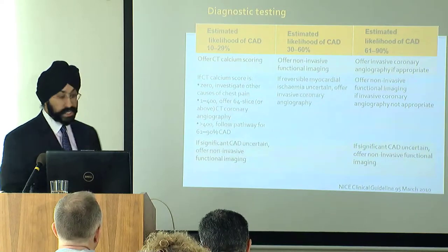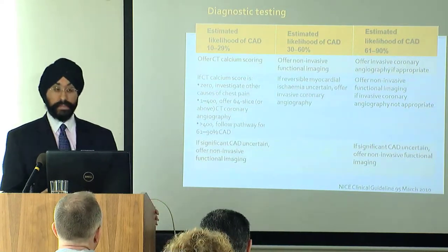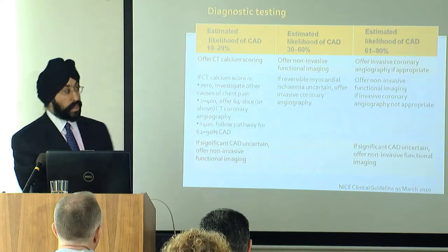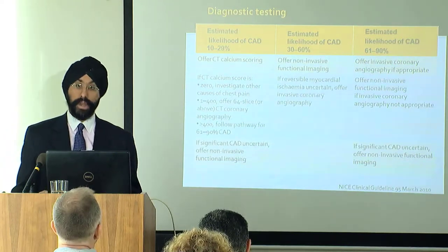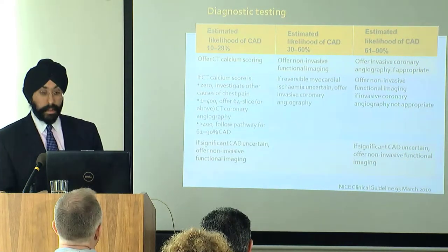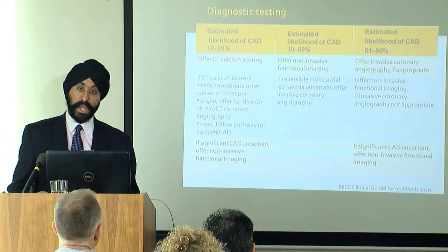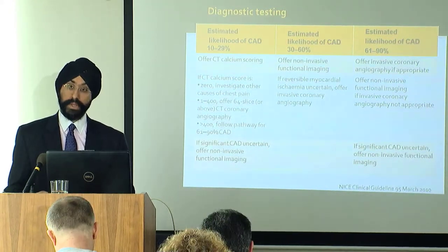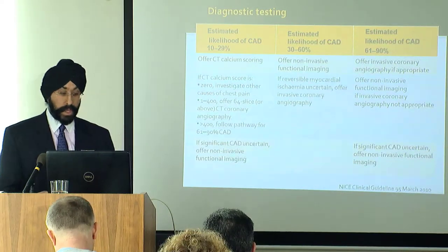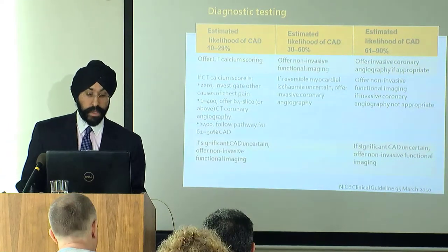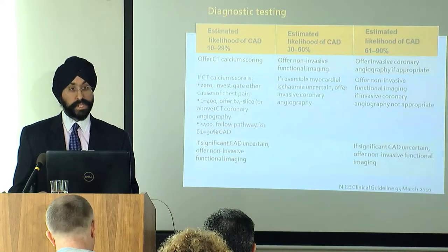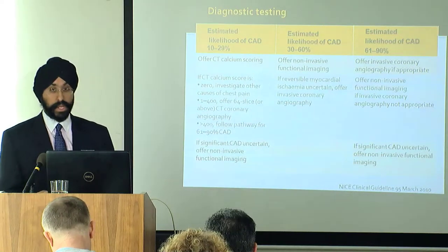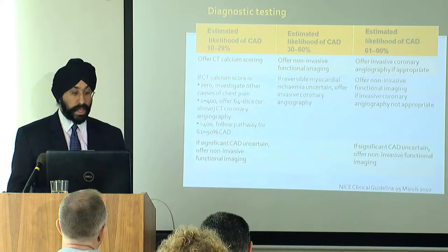If the calcium score is very high — over 400 — the recommendation is to progress to invasive coronary angiography, because when there's a lot of calcium it can be difficult to interpret. That's why the recommendation has been to proceed on to an angiogram which looks inside the lumen. However, with the latest generation of scanners, we are still able to give a good indication of where the calcium is and what the distal vessels look like, so CT coronary angiogram could still be useful in this group.